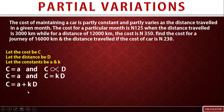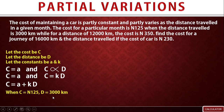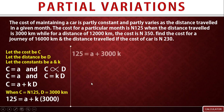Before solving, we need to determine the values of constants A and k. The cost for a particular month is 125 naira when the distance traveled is 3,000 kilometers. So C equals 125 and D equals 3,000. Substituting into C equals A plus kD gives: 125 equals A plus k times 3,000, which simplifies to 125 equals A plus 3,000k. We call this equation one.